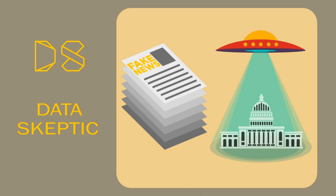Without further ado, let's get into it. My name is Mivan Babakar, and I am head of automated fact checking at Full Fact. Full Fact is the UK's independent fact checking charity. So we've been fact checking since 2010. And what we mean by fact checking is giving people the information that they need in as close to real time as possible to make up their own minds on issues that they care about.